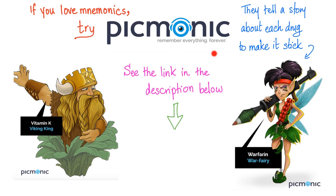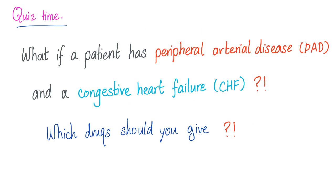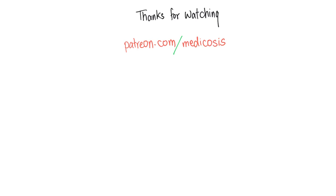If you love mnemonics, try Picmonic — they have great mnemonics with pictures, especially good for pharmacology and microbiology. See the link in the description. Quiz time: what if a patient has peripheral arterial disease with intermittent claudications AND congestive heart failure? Should you give cilostazol? If yes, tell me why. If no, what else will you give to help with the intermittent claudications? I'll see you in the next video. Please subscribe and join the tribe. You can get my cases and notes at patreon.com/metacosis. Until next time — be safe, stay happy, and study hard.